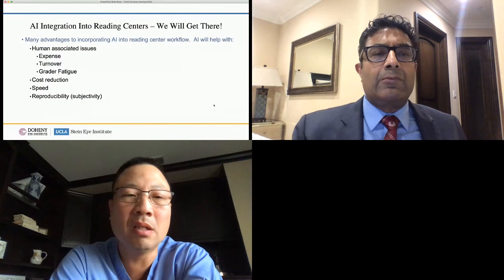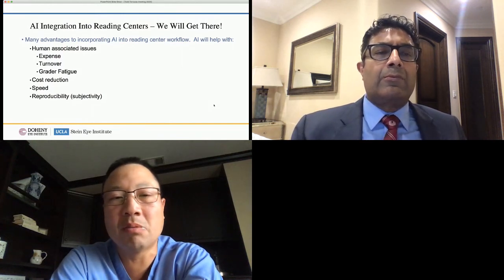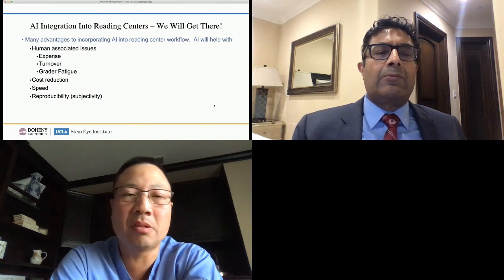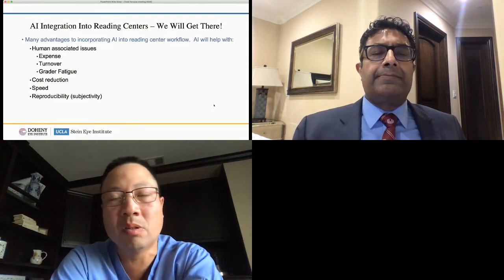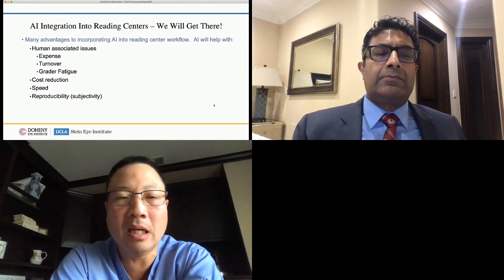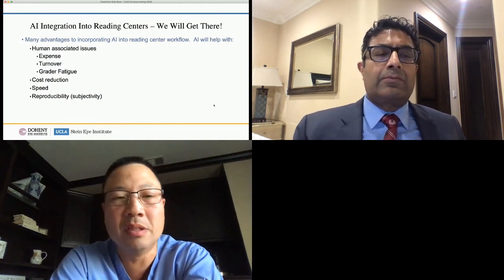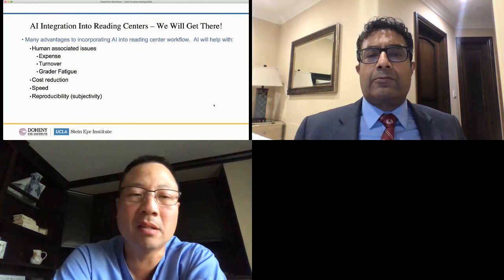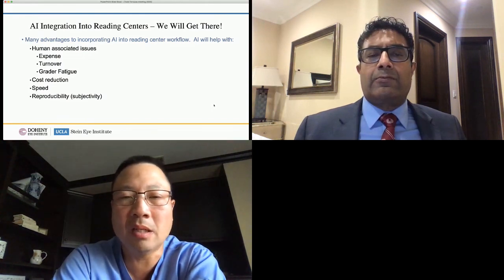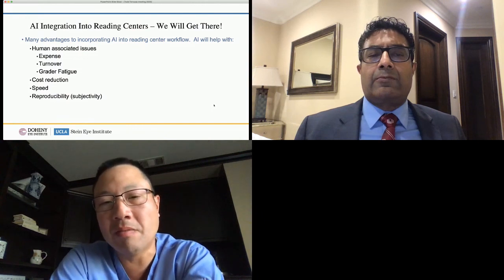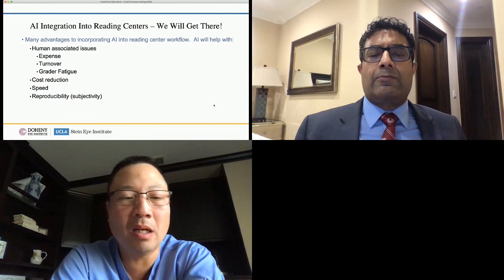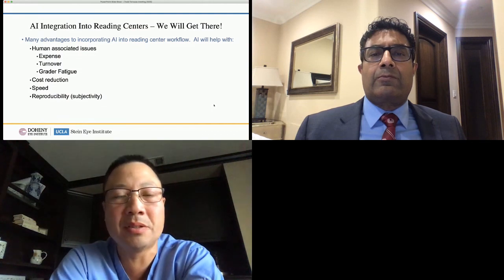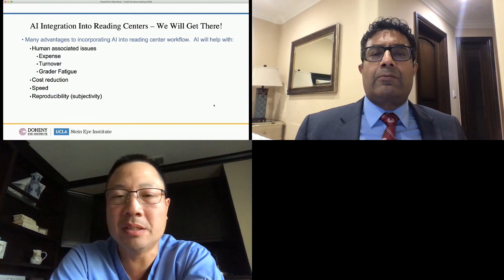To conclude: AI integration into reading centers still faces some problems, but I think we'll eventually get there. There are many advantages to incorporating AI into reading centers — they will certainly help with the human-associated issues of expense, turnover, and fatigue from looking at these images repeatedly. This will lead to cost reduction, increased speed, and I think it can take some of the subjectivity out of this process and help with our reproducibility metrics. Hopefully, by giving this overview, some of you in attendance may wish to collaborate with us on anything that may need an ophthalmic image reading center. Thank you for your attention.